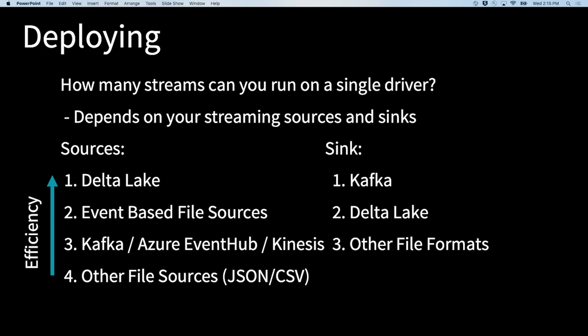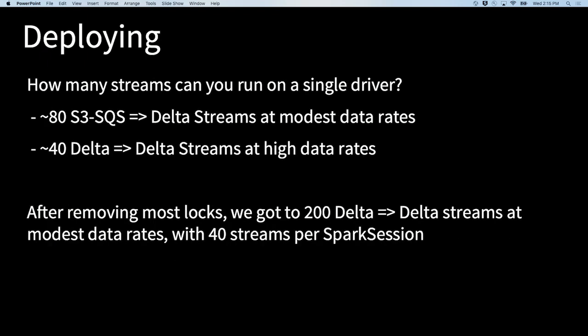The most efficient sources are Delta Lake — it has the most compact representation of source offsets using Parquet — then event-based file sources, then Kafka, Event Hub, and Kinesis (which hit rate limits), then open file sources requiring expensive directory diffing. The most efficient sinks are Kafka, Azure Event Hub, or Kinesis, then Delta, then other file formats. Based on customer experience: one customer runs 80 S3-SQS-to-Delta streams at modest data rates (around 10,000–100,000 records per second) on a single cluster with a 36-core driver. Another runs 40 Delta-to-Delta streams at millions of records per second with a 36-core driver. After removing most locks, we achieved 200 Delta-to-Delta streams at modest data rates by multiplexing across Spark sessions.